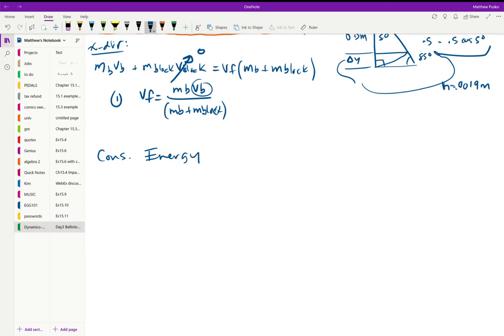Let's also conserve energy. We're going to look at this right after the impact, and that's when this final velocity is relevant. That final velocity, if we looked at the kinetic energy, would be the mass of the bullet plus the mass of the block times Vf squared.